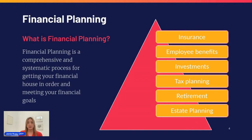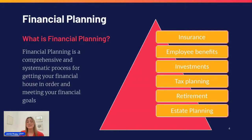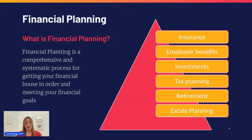Instead of just thinking about investments — which are certainly very important — we really want to take a holistic view of all of your financial life. Our financial planning pyramid covers items such as insurance, employee benefits or retirement plans, investments and investment planning, tax planning, retirement planning, education planning — how do we plan for a child's college or a loved one's education — and also estate planning. We want to ensure that all the various pieces work together.